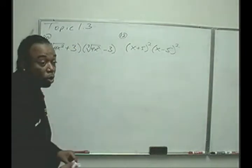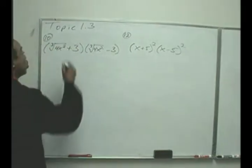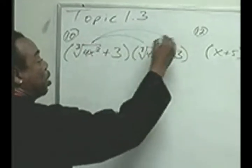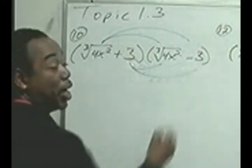We want to multiply these two binomials, so we'll use FOIL method, which is multiplying the first, the outside, the inside, and then the last.